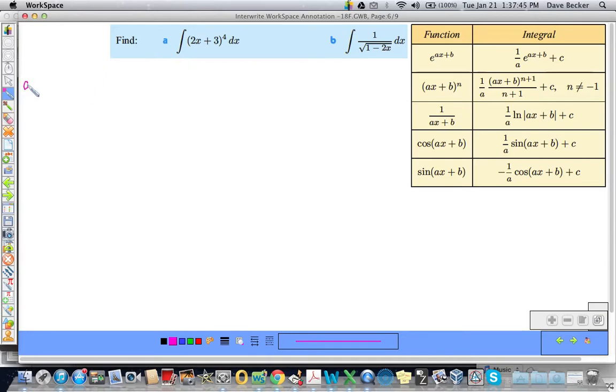So for this first one, part A, looks like we are in power function form AX plus B to the N power. So this will equal, I'm going to take my power function, 2X plus 3. I'm going to add 1, 4 plus 1 is 5. And I am going to divide by that result, 5.